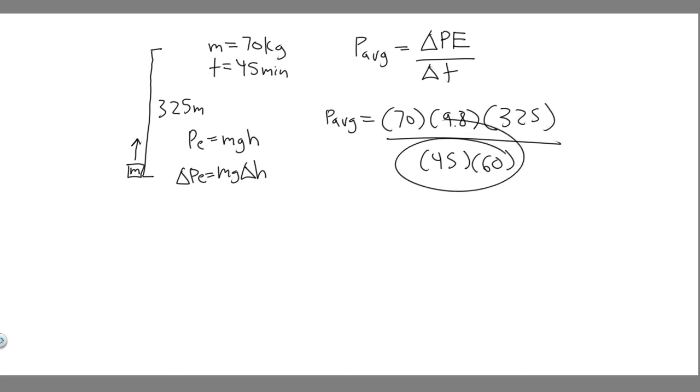So if you go ahead and do this, plug in your calculator, 70 times 9.8 times 325. Divide that number by, one second. 70 times 9.8 times 325.